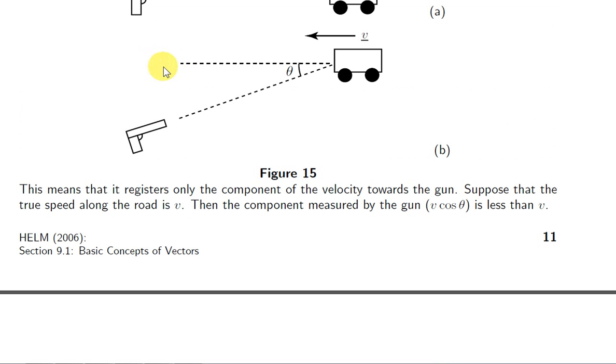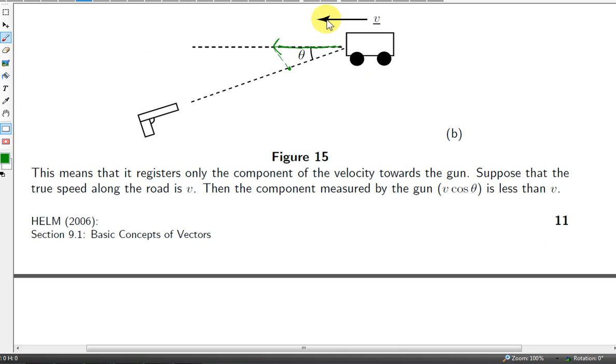Now, in general, the gun is not directed at the vehicle along a straight line in the direction of the vehicle's motion, but it's directed at some angle theta to the line of motion of the vehicle. Vector V is shown up here, but I'm showing it down here now as well, along the line of the vehicle's motion.